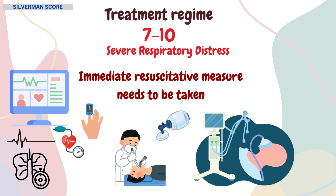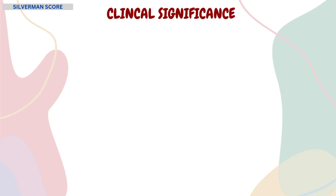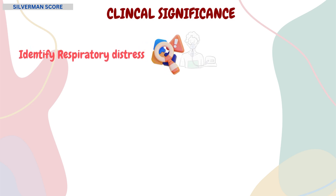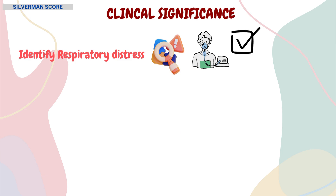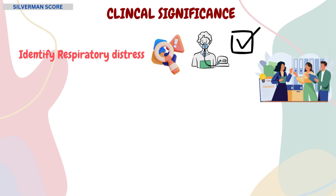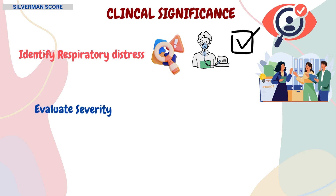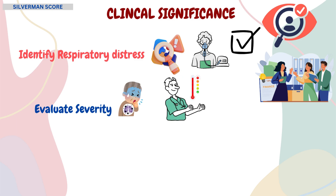Now let's talk about the clinical significance of the Silverman Anderson score. This score helps in the earliest identification of respiratory distress. It also provides a standardized way to assess respiratory distress, allowing healthcare providers to quickly identify infants who require close monitoring or intervention. This score acts as a major tool to evaluate the severity of respiratory distress.